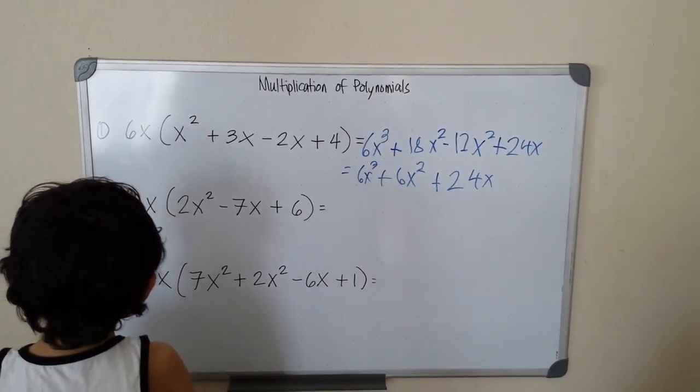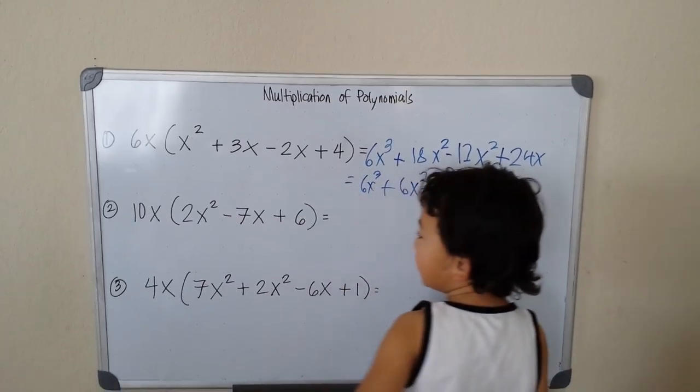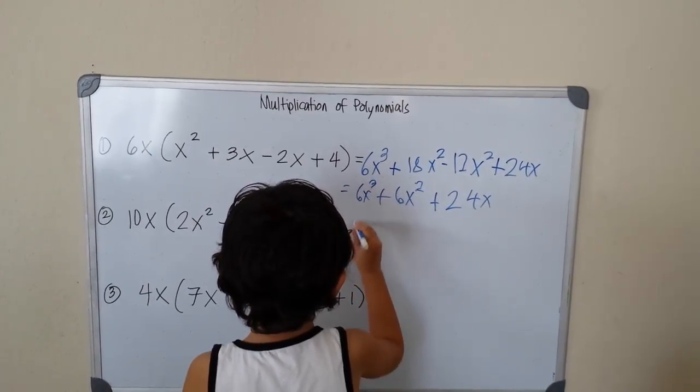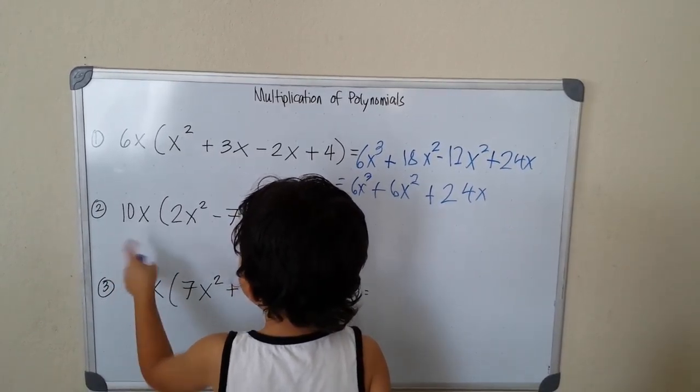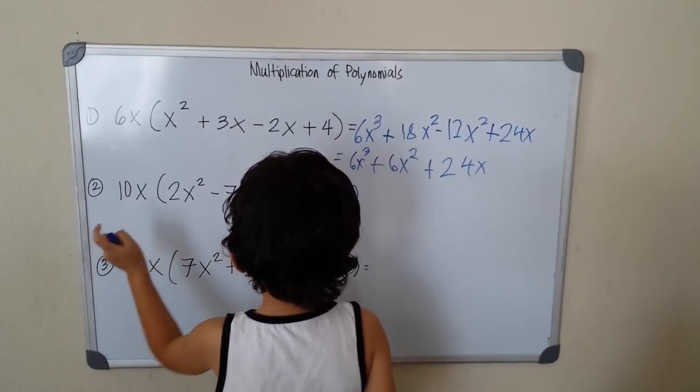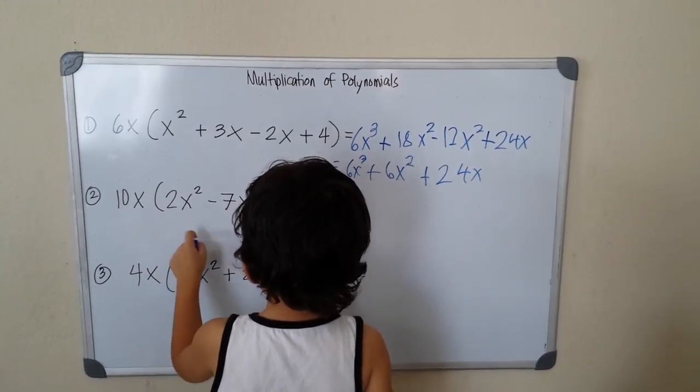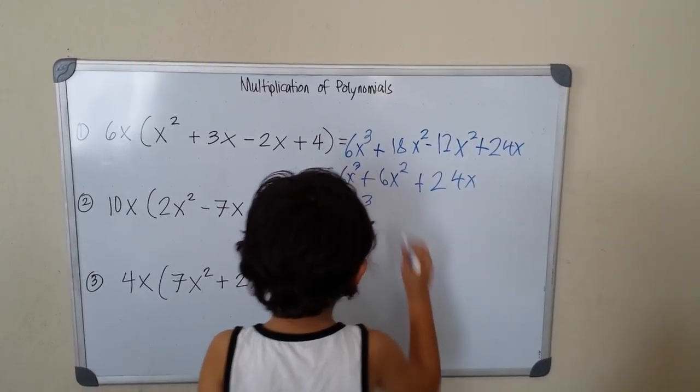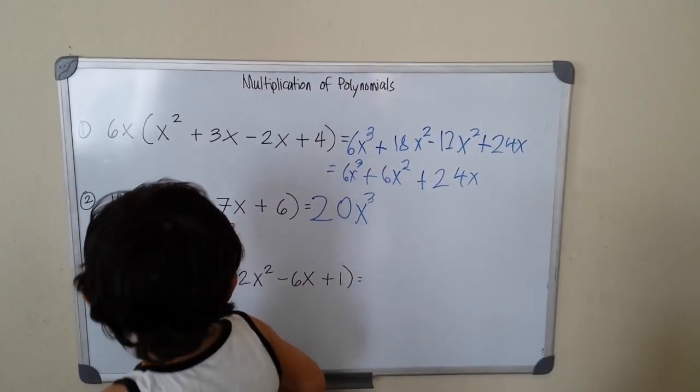So 10 times 2 will give me 20. So what are we going to do? x times x squared.